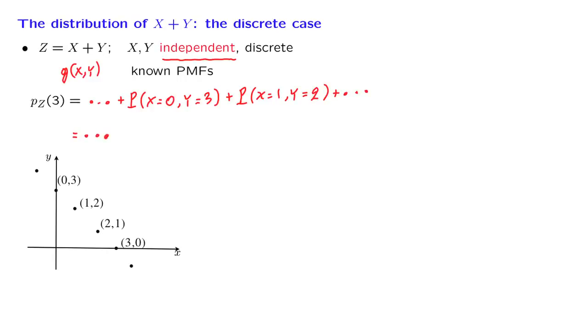Now, here comes an important step. Because we have assumed that x and y are independent, the probability of these two events happening is the product of the probabilities of each one of these events. So it is the product of the probability that x is equal to 0, where now I'm using PMF notation, times the probability that y is equal to 3. Similarly, the next term is the probability that x is equal to 1 times the probability that y is equal to 2. Again, we can do this because we are assuming that our two random variables are independent of each other.